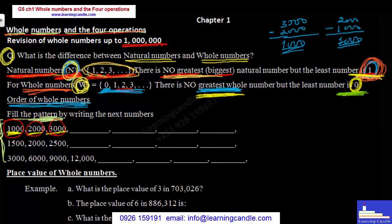So the next number is 4,000. Again, add 1,000. All the shown represents 2,000, 5,000. Then the same name is about 7.